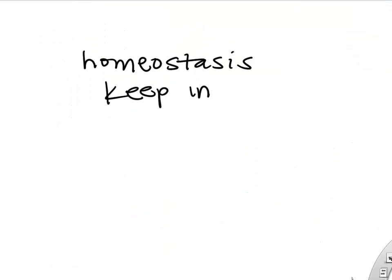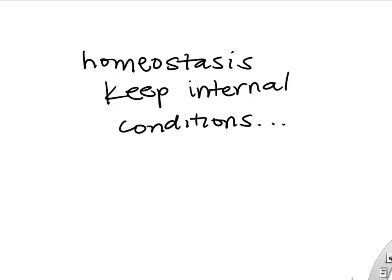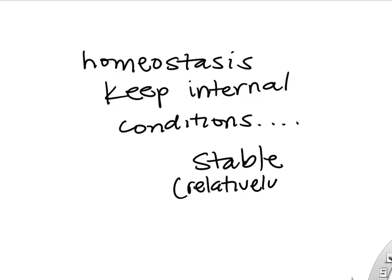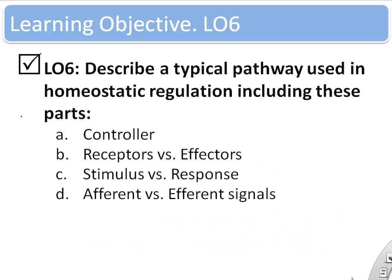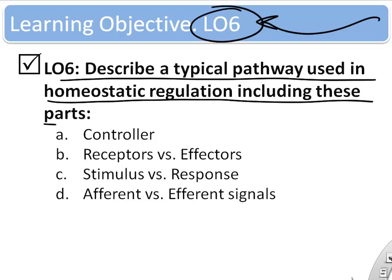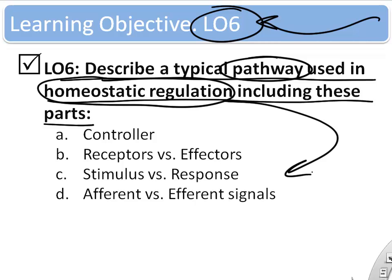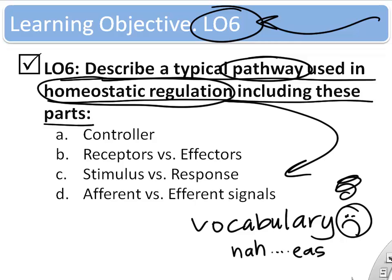Homeostasis is all about keeping the internal conditions and internal environment of your body relatively stable — not perfectly steady, but pretty stable. The examples we looked at were arterial blood pressure and body core temperature; those need to stay fairly stable throughout the day, otherwise you could die. They change a little — when you sleep you get a little colder, and when you exercise your blood pressure goes up a bit. The next learning objective looks at the vocabulary scientists use when talking about homeostasis and its regulation.